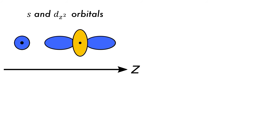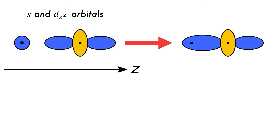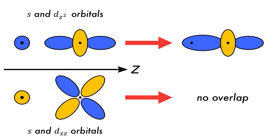Molecular orbitals can form between atomic orbitals of different type if their energies and symmetries are similar. If the Z-axis is kept as the bonding axis, an s-orbital and the dz² orbital can overlap and form a molecular orbital. Other combinations of atomic orbitals are less successful, such as between the s and the dxz atomic orbitals, as the s-orbital approaches along the node in the d-orbital.